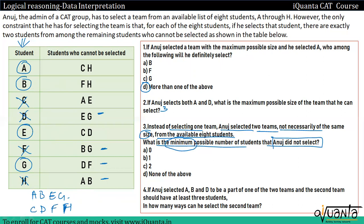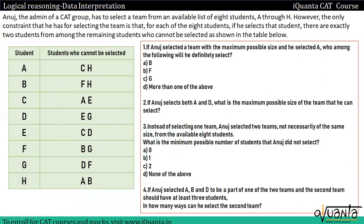H के लिए A और B को — means इन चारों की एक team बना सकते हैं: C, D, F और H। और एक team पहले बनाई थी: A, B, E और G। तो हमने दो teams बना ली हैं। Minimum हमारे पास zero students हैं जो किसी भी team में select नहीं हुए। So what is the minimum possible number of students that Anuj did not select? Answer zero है — क्योंकि हमने 4+4 members की teams बना ली हैं, सभी students किसी ना किसी team के part हैं। Answer option A: zero।